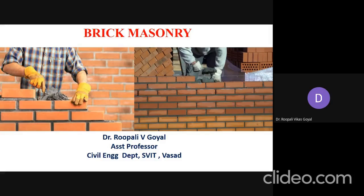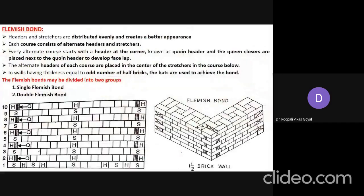Today we are going to discuss the remaining bonds in brick masonry. Up to the last lecture, we discussed header bond, stretcher bond, and English bond. Today we will discuss in detail about the remaining bonds, starting with Flemish bond.